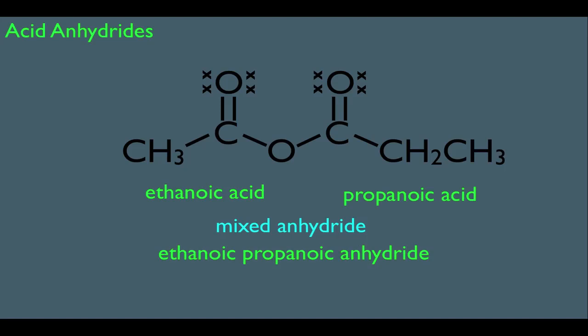Notice we're purposely listing ethanoic before propanoic. We've seen this before in Nomenclature in Organic Chemistry 1 — we place names in the group by alphabetical order. So that's why E, ethanoic, goes before P, propanoic. You could even use the common name method for mixed anhydrides as well. The common name for this would be acetic propanoic anhydride. Again, notice we're listing both sides of the anhydride and putting them in alphabetical order — acetic comes before propionic.